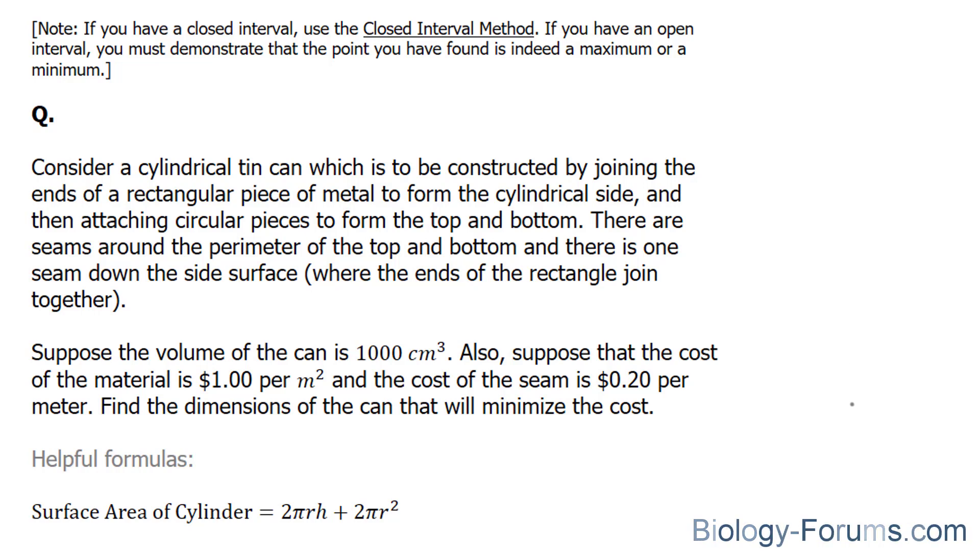The can is to be constructed by joining the ends of a rectangular piece of metal to form the cylindrical sides, and then attaching circular pieces to form the top and the bottom. There are seams around the perimeter of the top and the bottom, and there is one seam down the side surface.